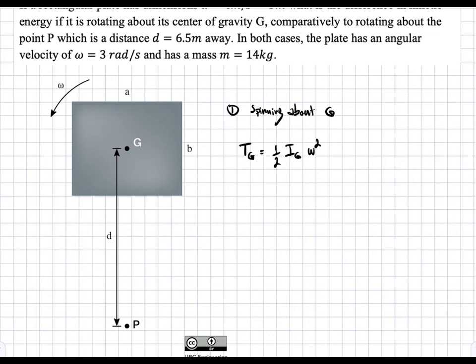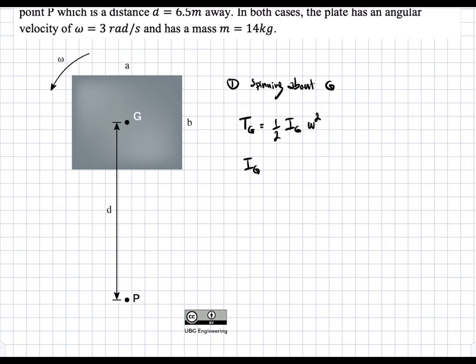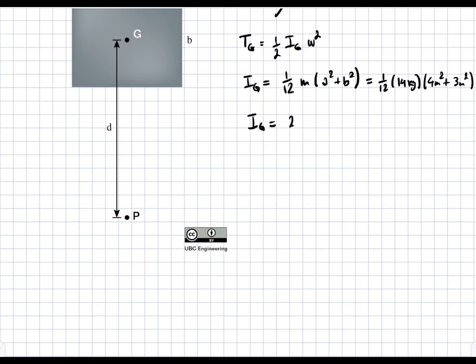So we need to find what I_G is. I_G is essentially the I for plate, which is given by the dimensions ab about G, which for a plate like this is given by the following formula: one-twelfth m times a squared plus b squared. If we actually plug in values into this equation, we get that one-twelfth times the mass, which is 14 kilograms times four meters squared plus three meters squared, gives us that I_G is equal to 29.2 kilograms meters squared.